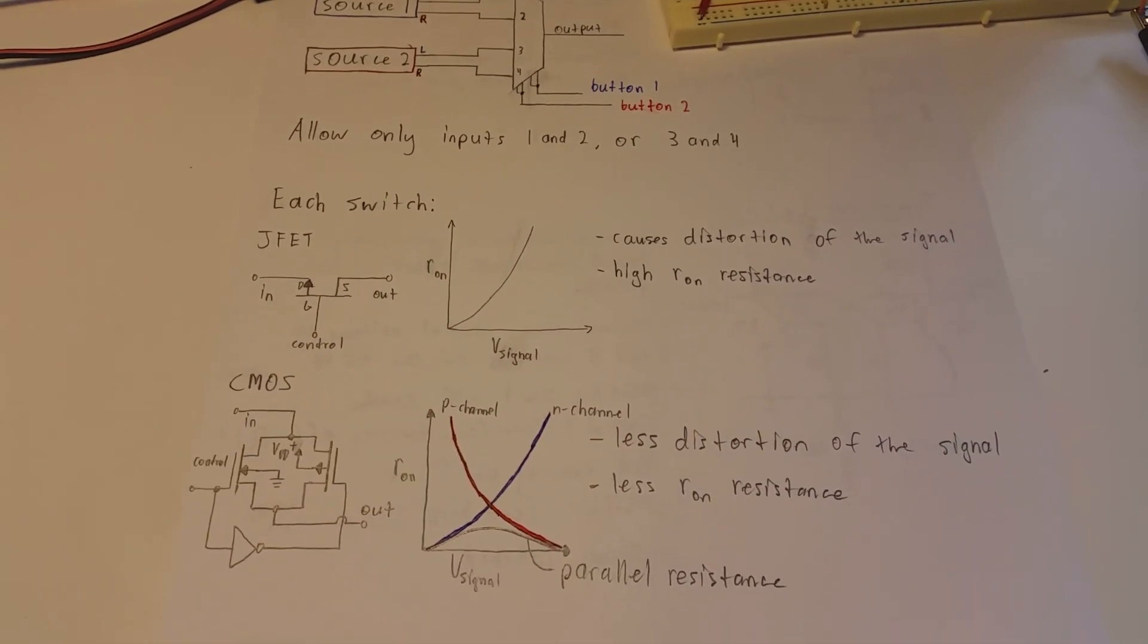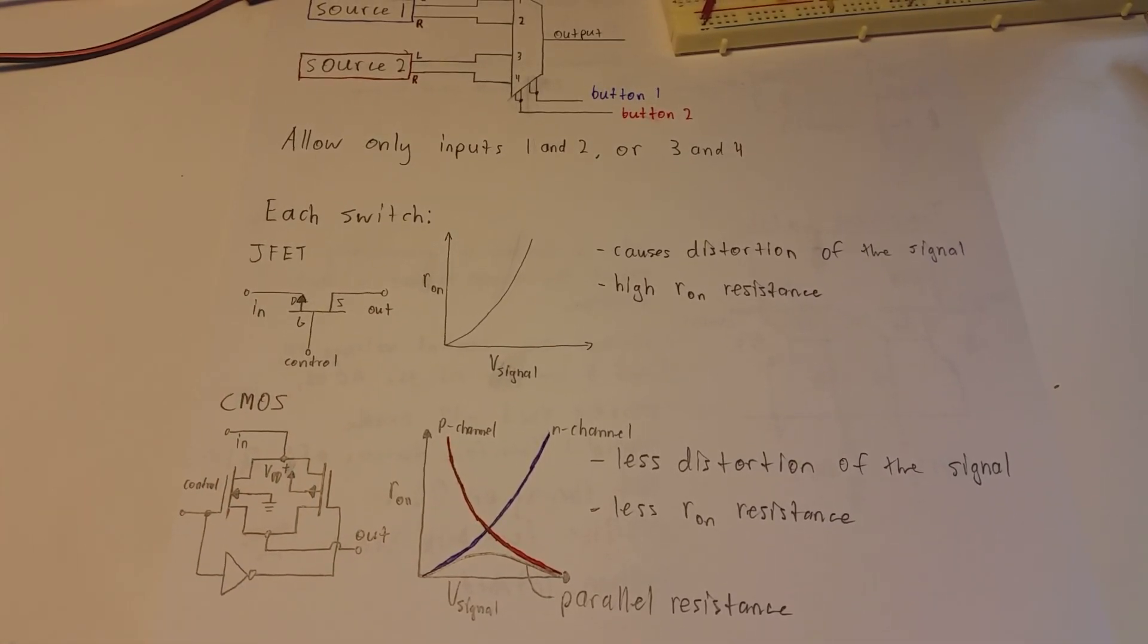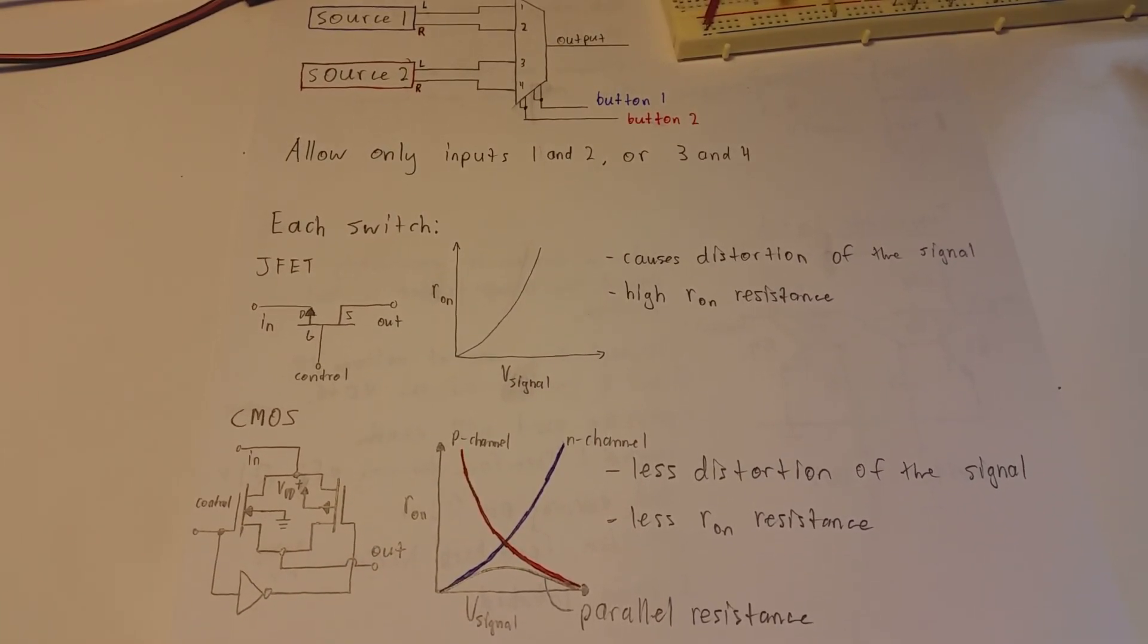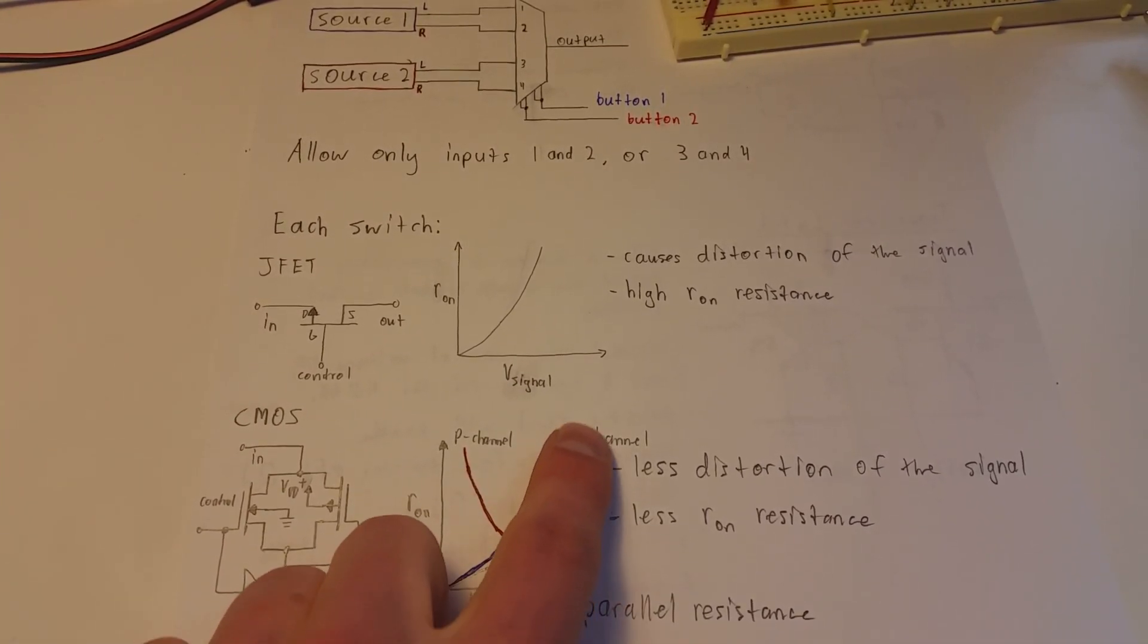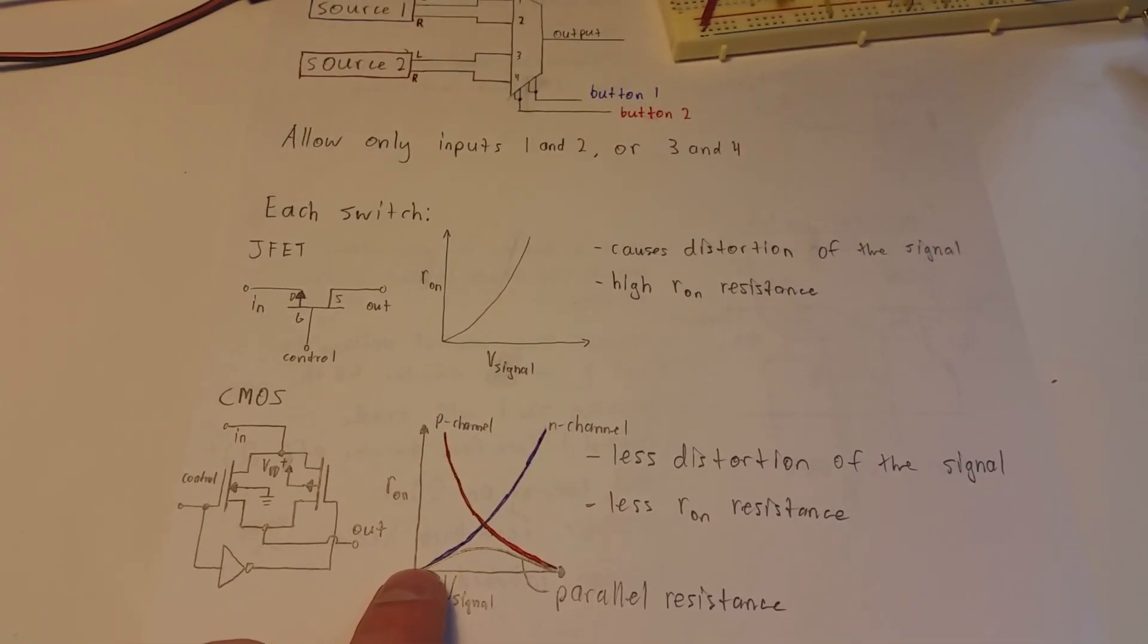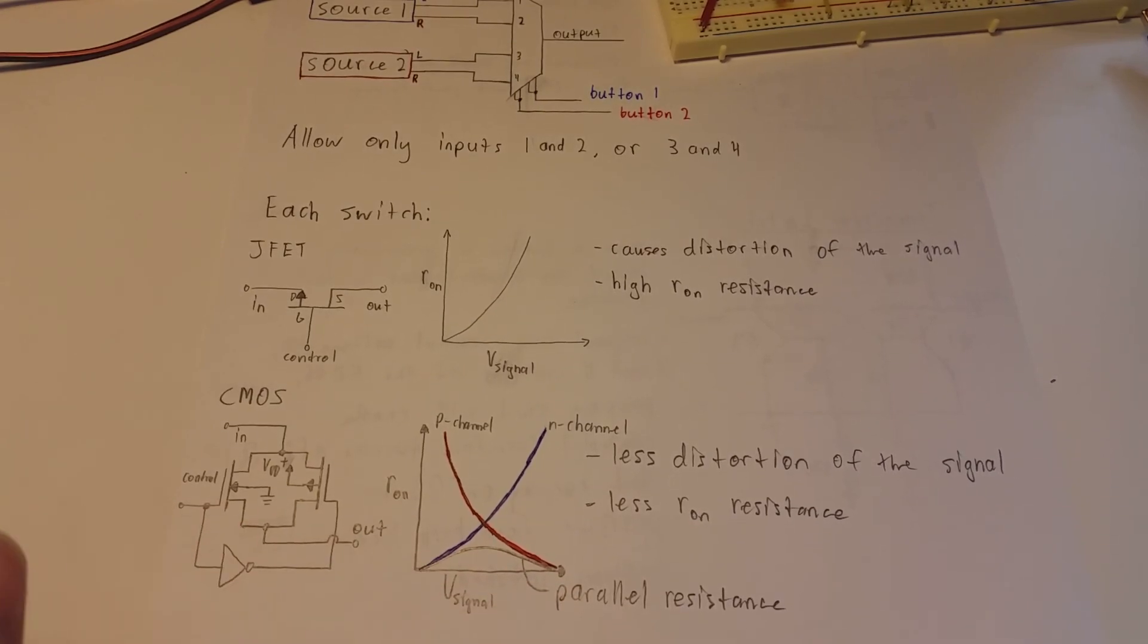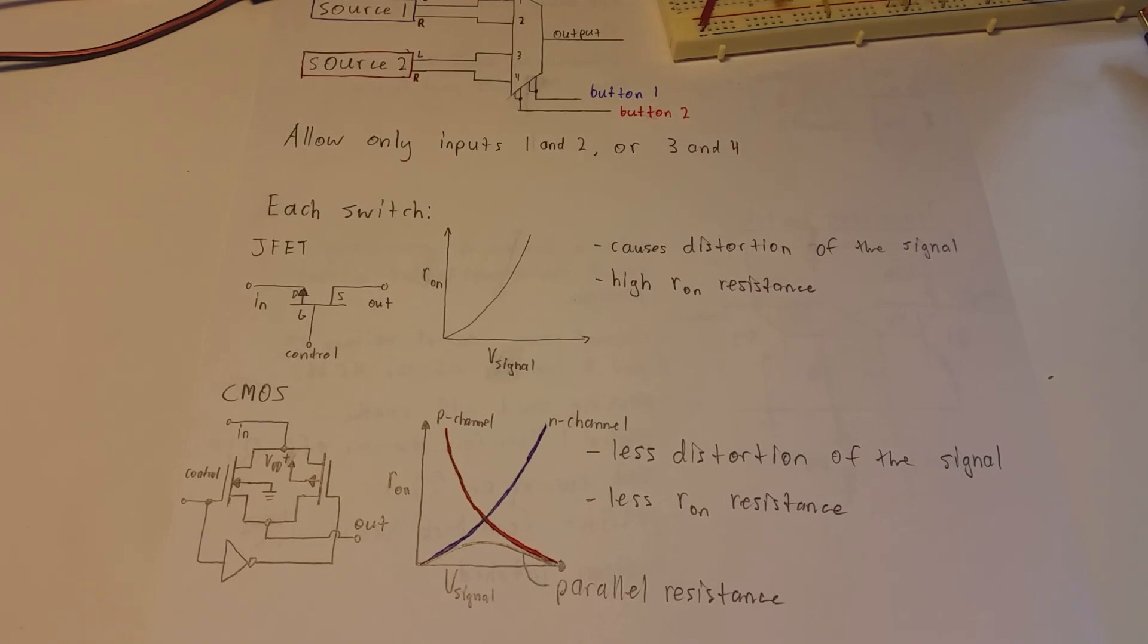A better way, a slightly better way, is to use CMOS, or complementary MOSFETs. Complementary meaning you have a P-channel and an N-channel together, being driven by the same control voltage and by the same source. So they still have the same resistance curves, but the opposite. So in parallel together, you get this much less extreme change in resistance as your signal varies. So you get less distortion of your signal, because there's less on resistance and less change.